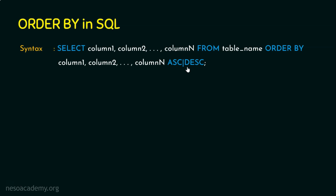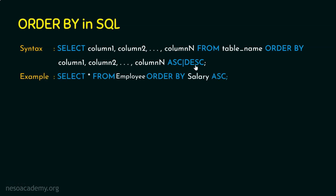Let's see an example. Here I'm going to select all the columns from the employee table, ORDER BY the salary column, and I need ascending order so I'm using ASC. The output of this query will select all columns and the result will be sorted by salary in increasing or ascending order.